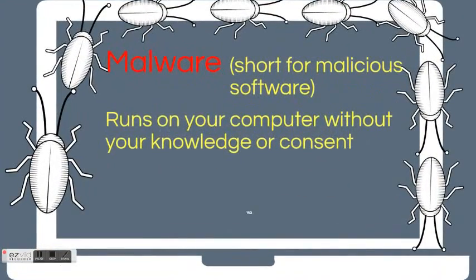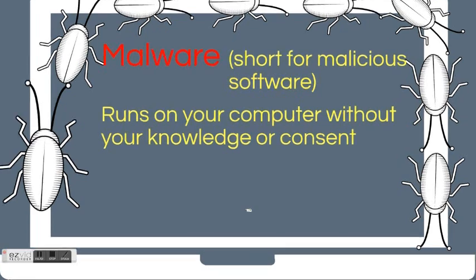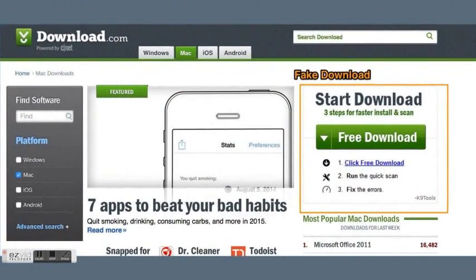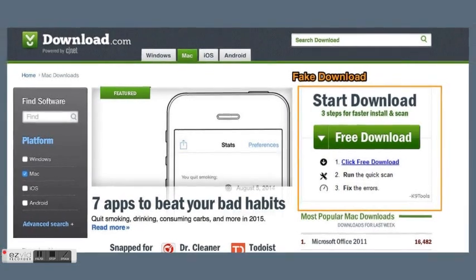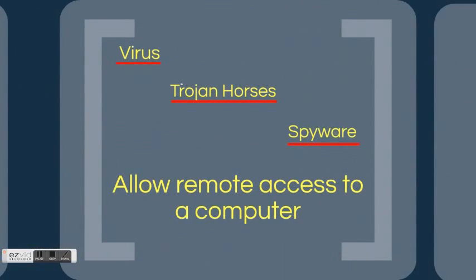Another method that allows for cyberstalking is malware. It is short for malicious software. They are programs that install and run on your computer without your knowledge or consent. Some websites are designed to trick you into downloading and installing malware. Once installed, malware usually causes harm to the computer or user by deleting data or gaining access to personal information. Viruses, trojans, and spyware are a few forms of malware that allow for remote access to a computer.